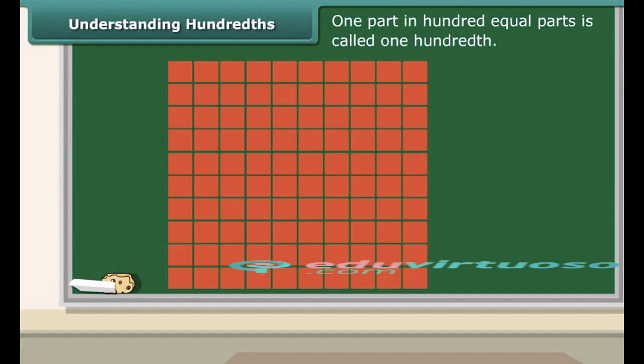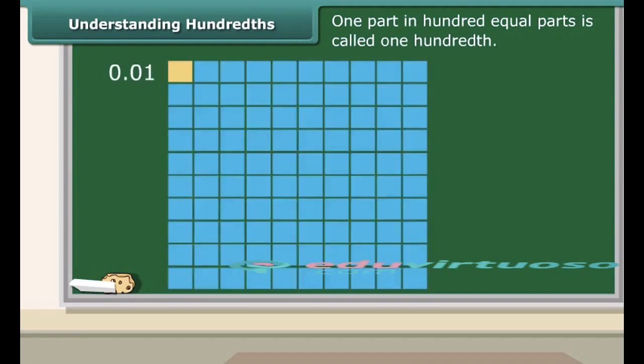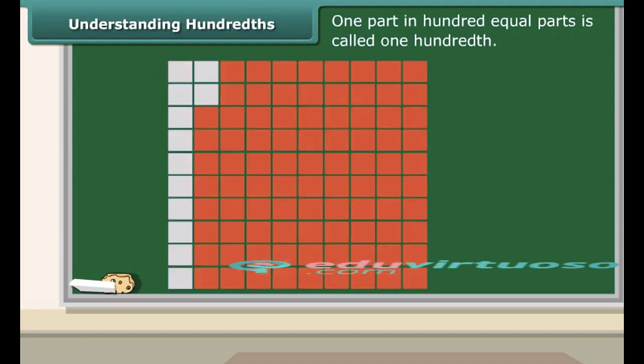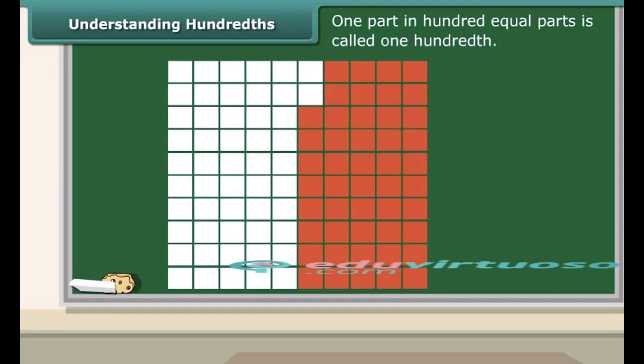One part in 100 equal parts is called 1 hundredth. Each small square is 1 hundredth of the whole square. In decimal notation, we read it as 0.01. 12 shaded squares will make 12 hundredths or 0.12. 33 shaded squares will make 33 hundredths or 0.33. 52 shaded squares will make 52 hundredths or 0.52.